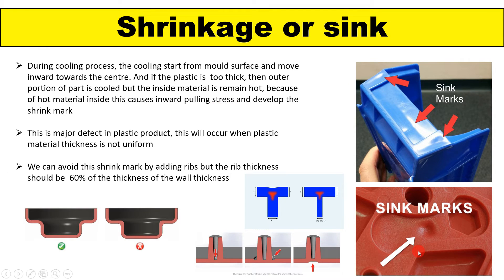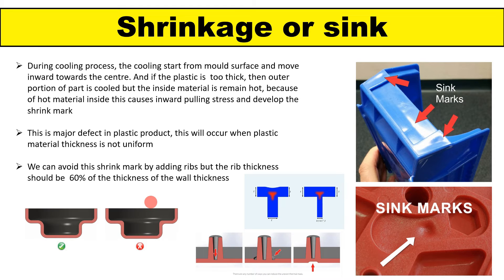To avoid this type of shrinkage, we need to keep the uniform thickness of the part. While designing the ribs and bosses of the plastic part, we need to think about maintaining uniform thickness. We need to maintain uniform thickness while designing the ribs and bosses, and also for the complete geometry of the part — we need to take uniform thickness throughout the plastic part.